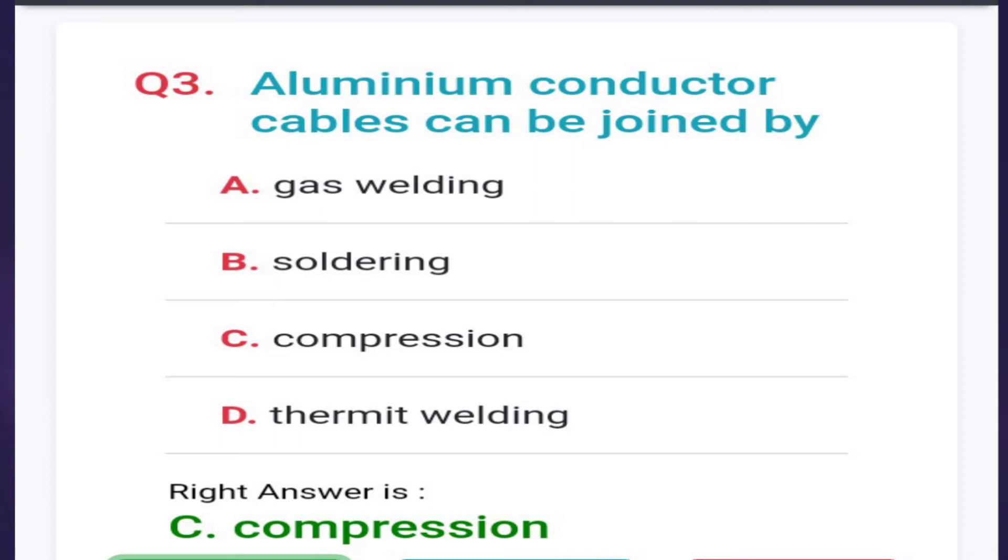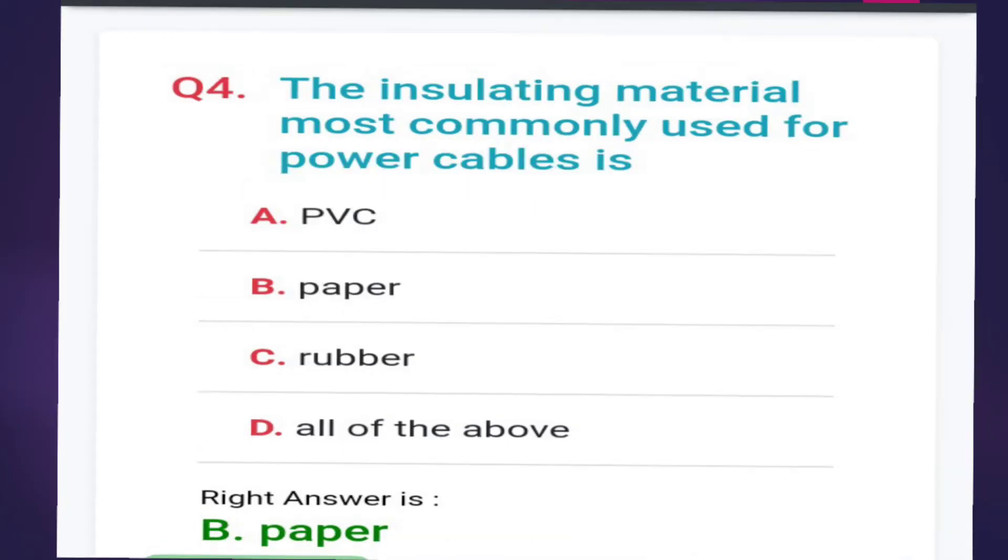Third: aluminum conductor cables can be joined by gas welding, soldering, compression, or thermite welding. The answer is option C, compression. Fourth: the insulating material most commonly used for power cables is options PVC, paper, rubber, or all of the above. The answer is option B, paper.